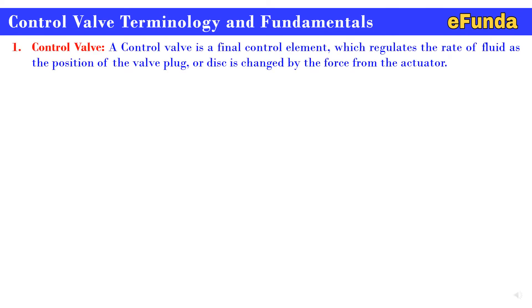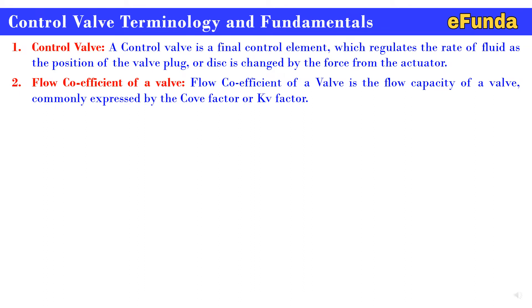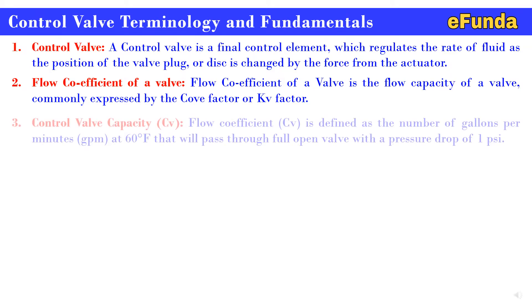First: control valve. A control valve is a final control element which regulates the rate of fluid flow as the position of the valve plug or disk is changed by the force from the actuator. Second: flow coefficient of a valve. The flow coefficient is the flow capacity of a valve, commonly expressed by the Cv factor or Kv factor.